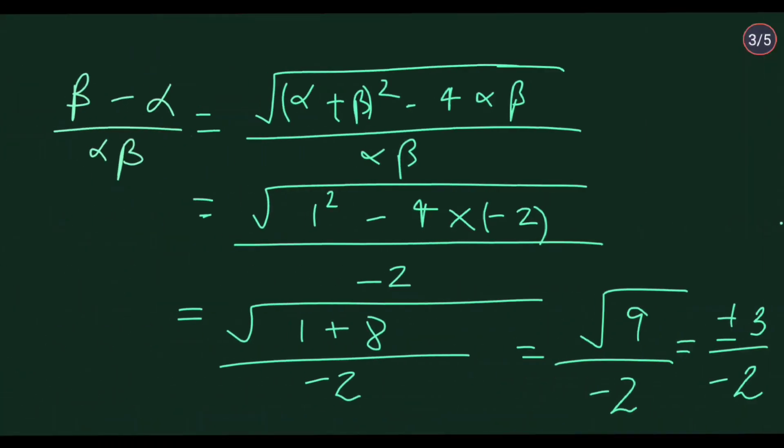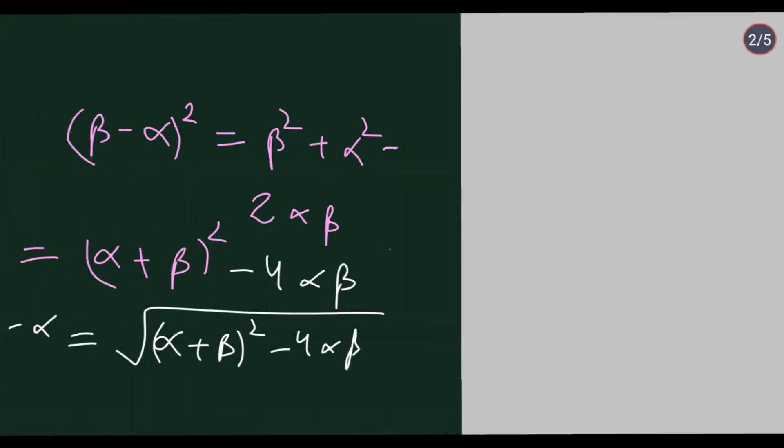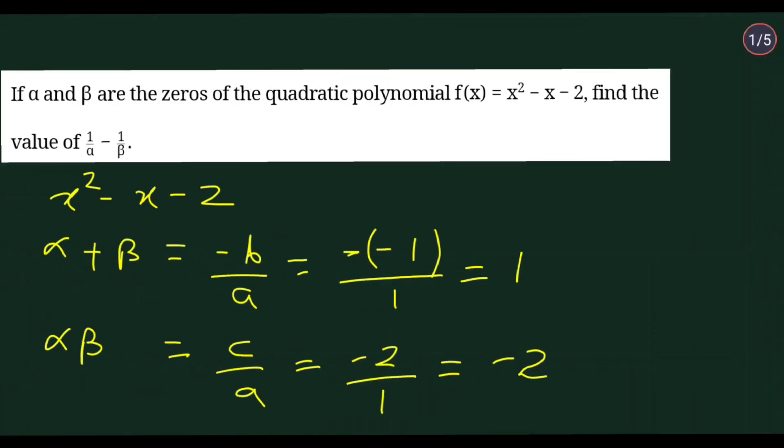So we solved this question by this method, by finding the values of alpha plus beta and alpha beta. Now we can solve this question by a second method. The second method is you directly find the two zeros of this quadratic polynomial.